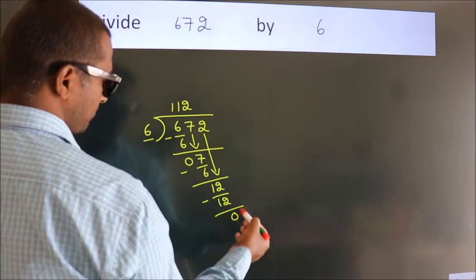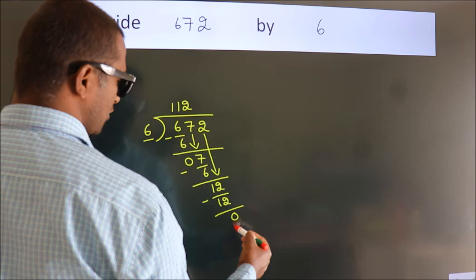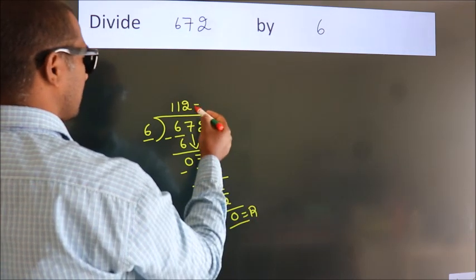After this, no more numbers to bring it down, so we stop here. This is our remainder. This is our quotient.